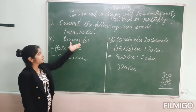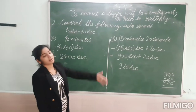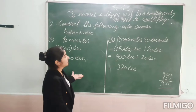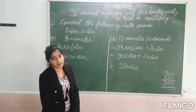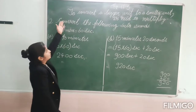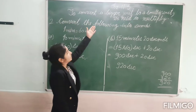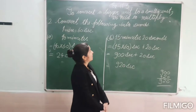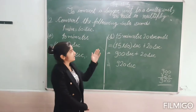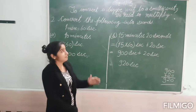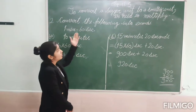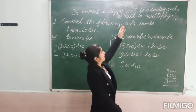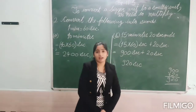Next, we will convert the minute unit into seconds, then multiply. To convert a bigger unit to a smaller unit, we need to multiply. When we convert a bigger unit into a smaller unit, we multiply.